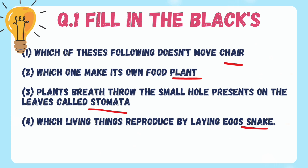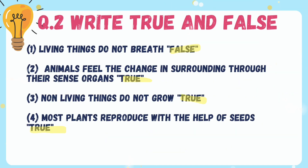Question number two: true and false. First — living things do not breathe. This sentence is false. Animals feel the changes in surrounding through their sense organs — this is true. Non-living things do not grow — true. Most plants reproduce with the help of seeds — this sentence is also true. The sequence is: false, true, true, true.